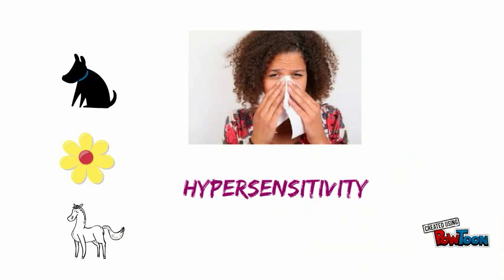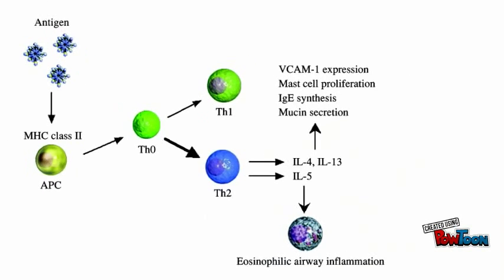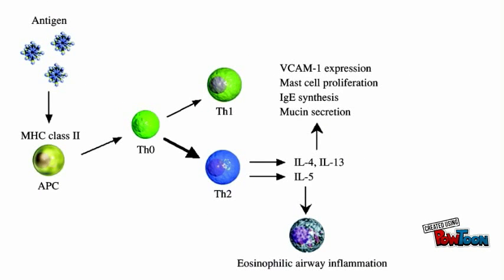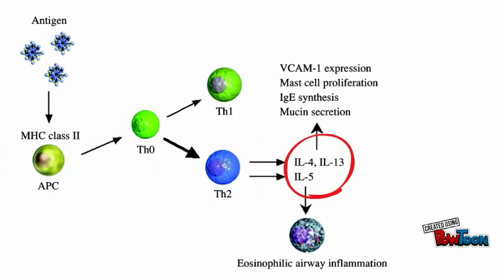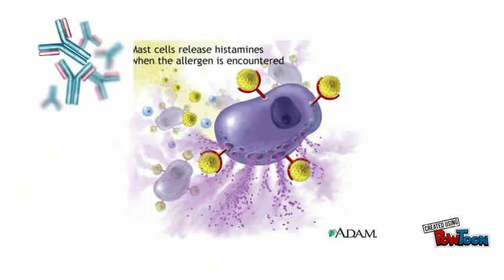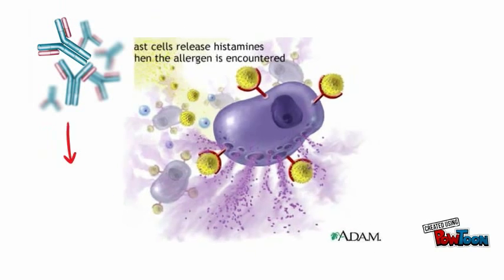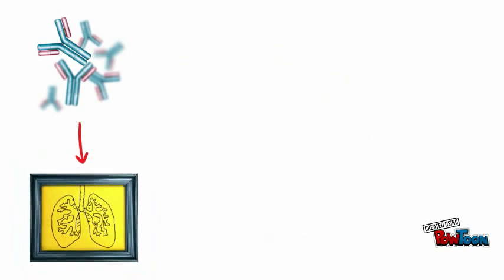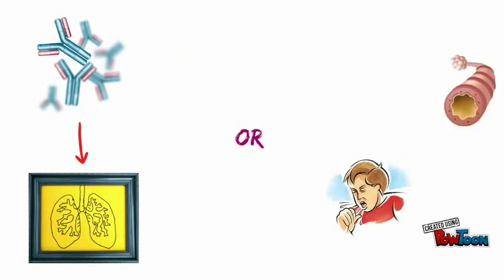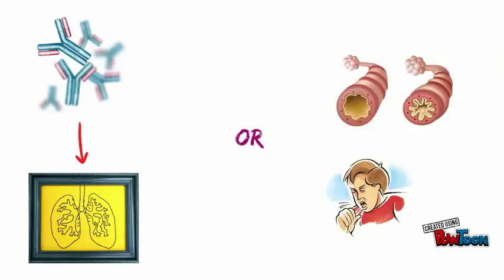Asthma can be a consequence of the immune system's response to an allergen. This response includes the release of chemical signals such as cytokines like interleukin-4, interleukin-5, or interleukin-13, and histamines, all of which either recruit more immune cells to the lung or lead to symptoms.